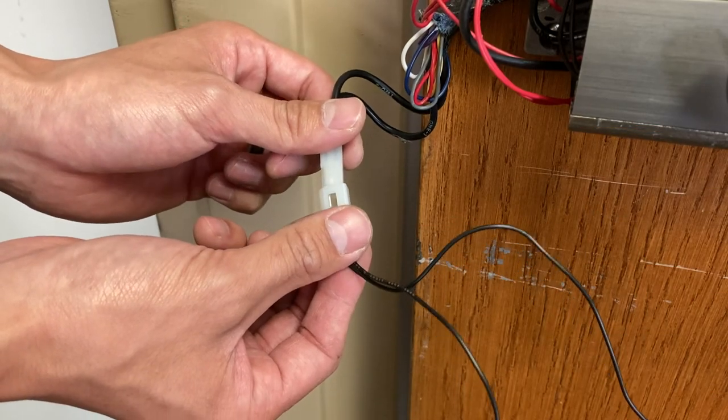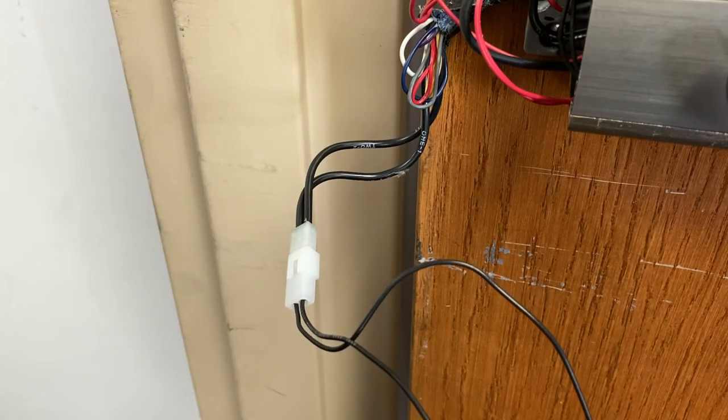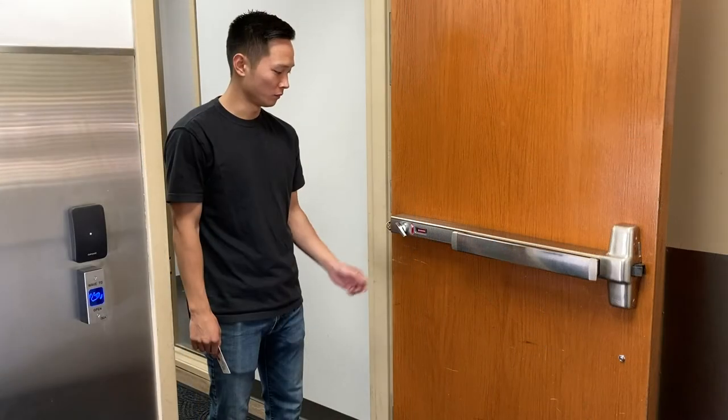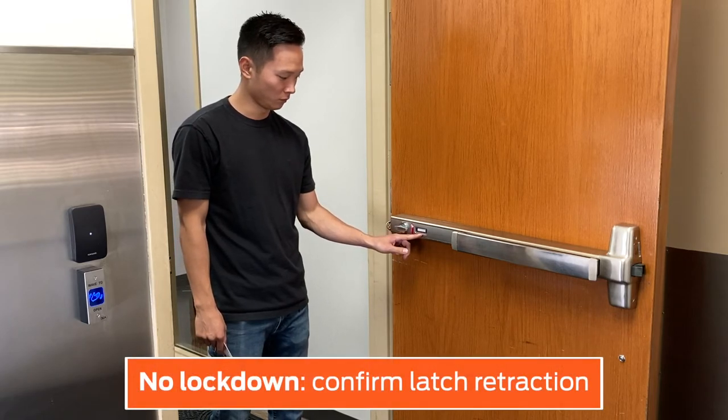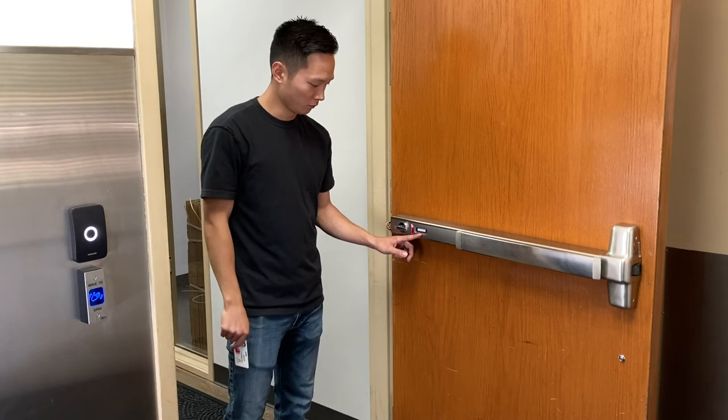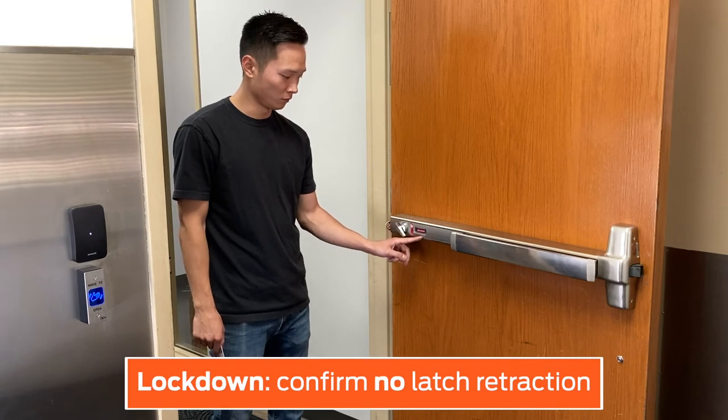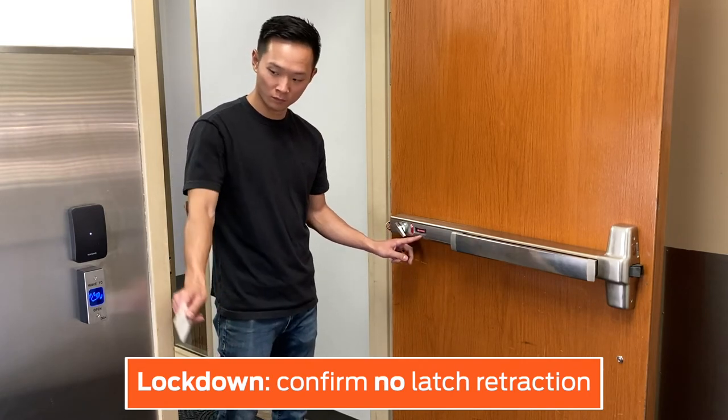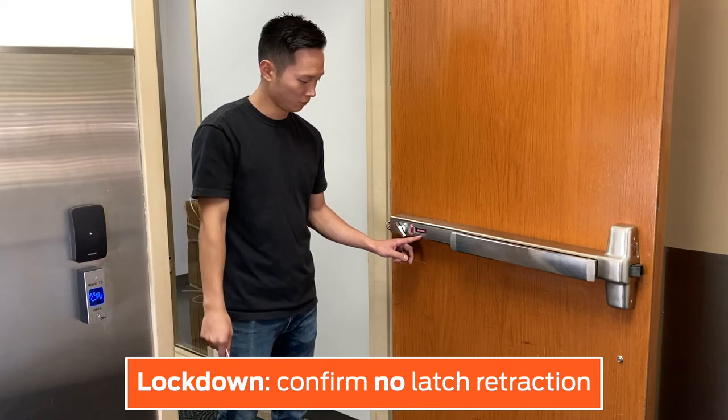Connect the power cable to the two-pin connector on the ESL and turn on the power. Turn the ESL so the indicator is not in lockdown. Present a valid credential to the reader and confirm QEL retracts the latch. Then turn the ESL to lockdown position. Present a valid credential to the reader and confirm QEL does not retract the latch bolt.